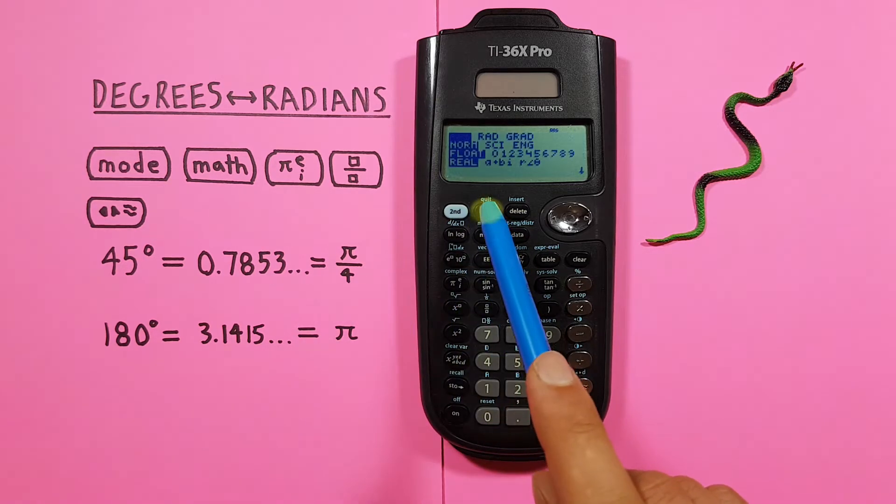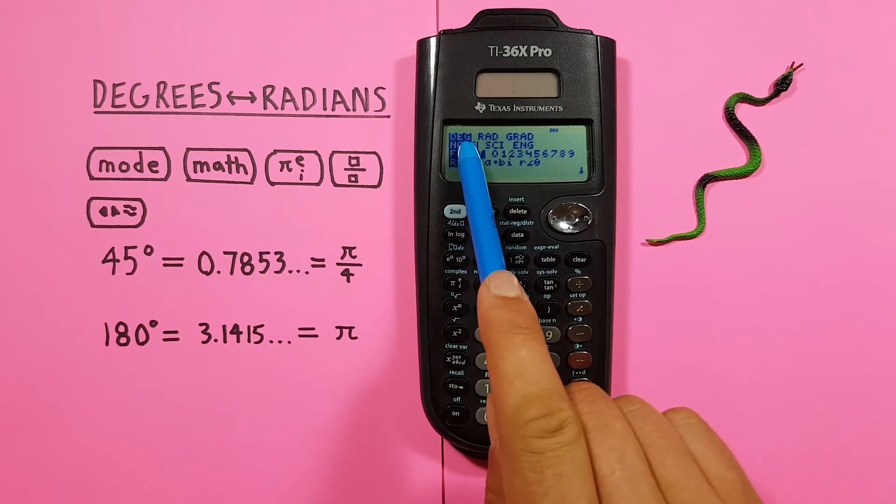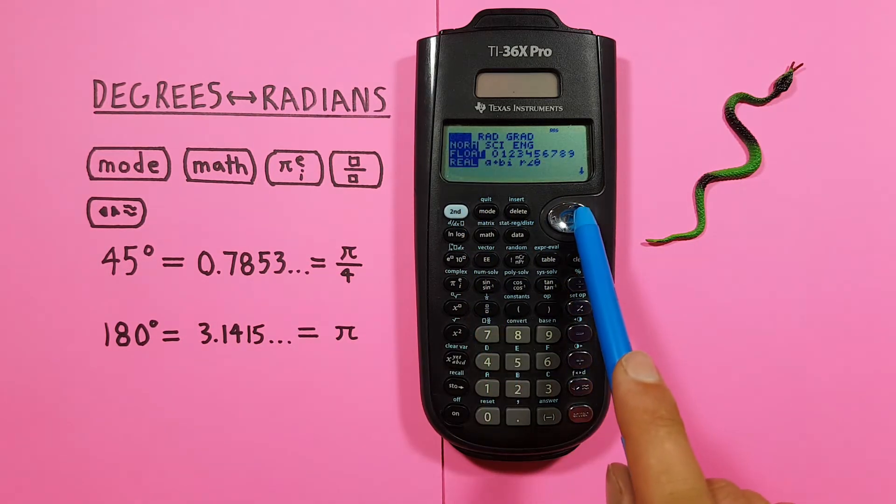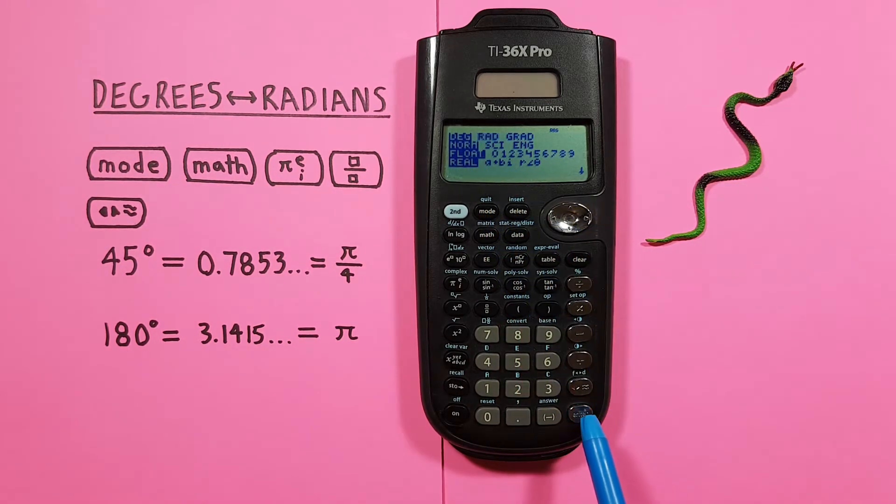What we want to do is change this to radians mode. So we press the Mode key. We get this menu here and we see DEG is highlighted. We scroll over to rad or radians mode and press Enter.